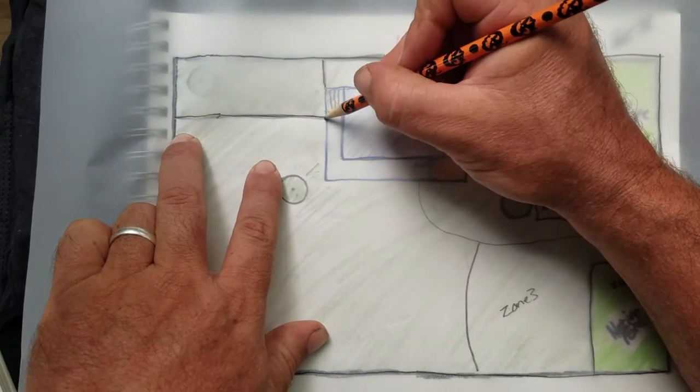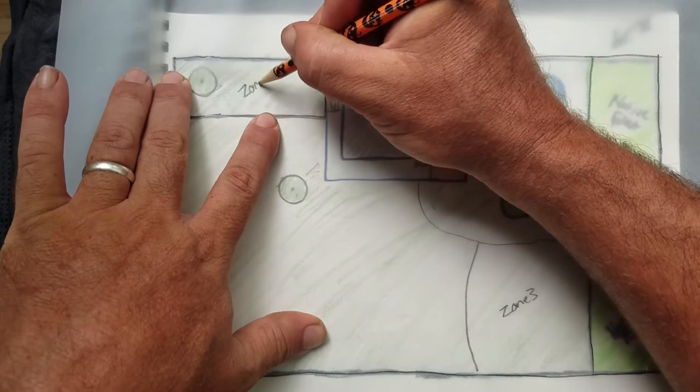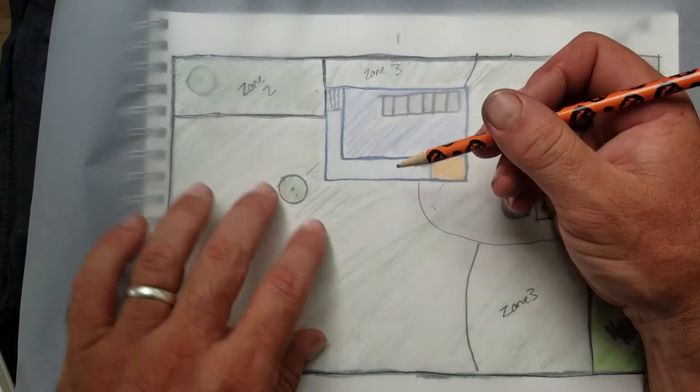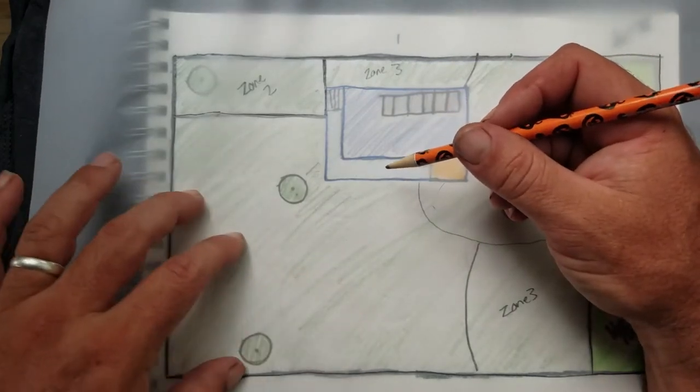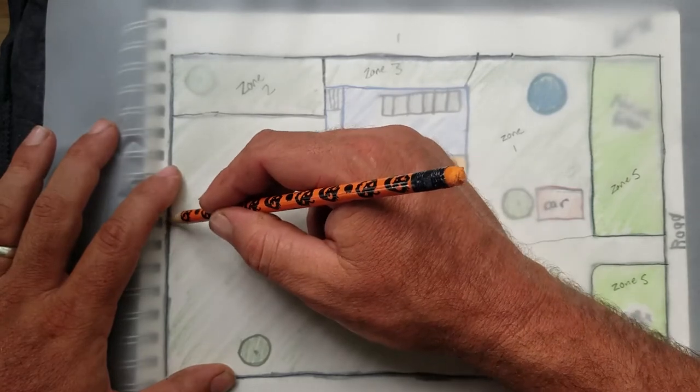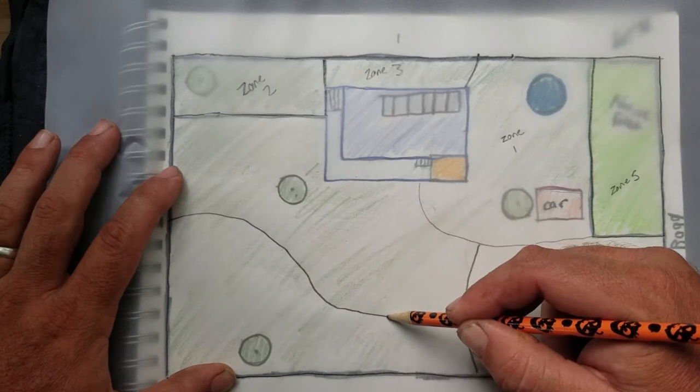Mostly visited by the dog, but you got to clean up that dog poop every now and then, so that's a regular visit. And then what we have is a little bit more of a zone three out here in this corner, going along the fence here.